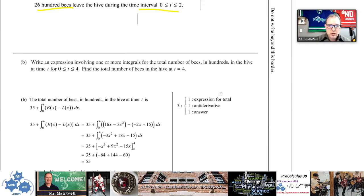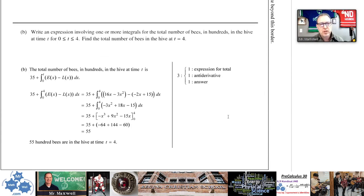So let's take a look at B now. Actually I'll just go down here and show you the solution as well. So B says write an expression involving one or more integrals for the total number of bees in hundreds, in the hive, at time t for 0 to 4. Find the total number of bees at the hive at t equals 4. So that's the second part of the question. So the total number of bees are going to be your number of bees in hundreds. Remember, this is in hundreds, so this 3,500 should just be 35. 35 plus the integral from 0 to t, whatever t is. So 0 to t. And we want to take the rate of entering, subtract the rate of leaving.